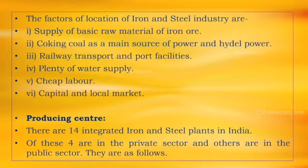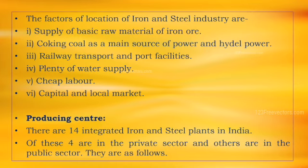What are the factors required for the location of iron and steel industry? 1. Supply of basic raw material, that is iron ore. 2. Coking coal as a main source of power and hydroelectric power. 3. Railway transport and port facilities. 4. Plenty of water supply. 5. Cheap labour facility. 6. Capital and local market. These are the factors required for the location of iron and steel industry.